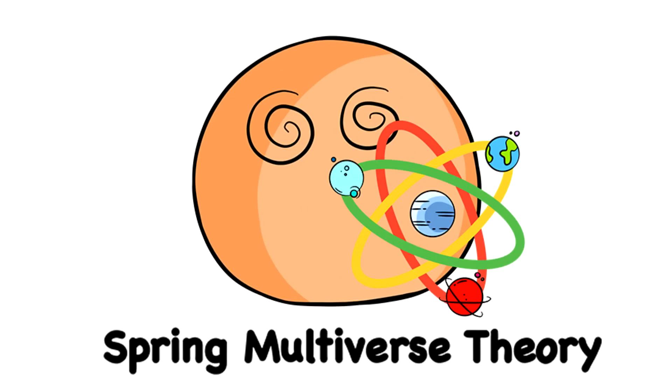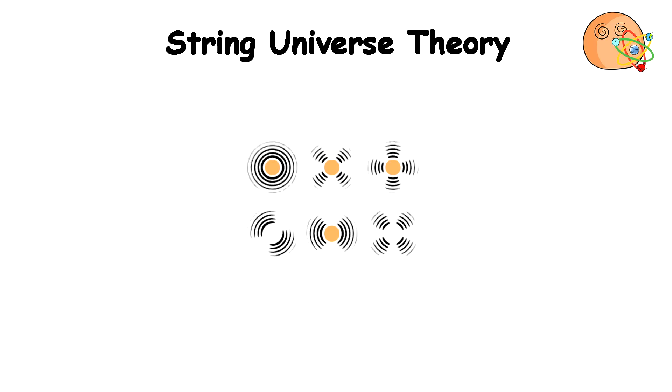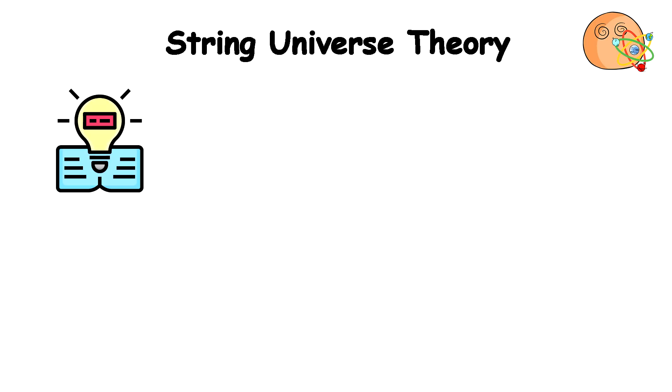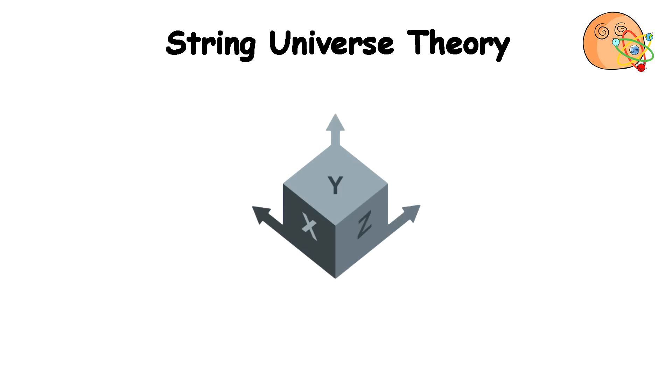String Universe Theory. At the most basic level, particles are not dots, but tiny vibrating strings. Different vibrations of the strings lead to different particle properties. String Theory requires extra dimensions of space beyond our usual three, likely coiled up at very tiny scales.